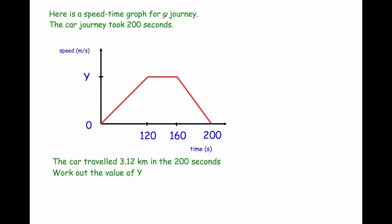Our last example is another speed-time graph. The speed is given as y — an unknown value — the journey lasts 200 seconds, and we're told the total distance traveled is 3.12 kilometers. We need to find y. First, converting: 3.12 km = 3120 meters. We split the graph into three regions — two triangles and a rectangle — and express each area in terms of y.